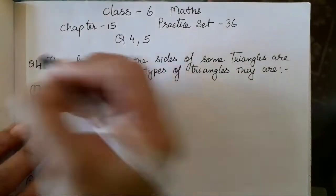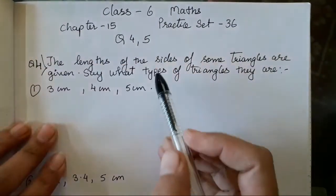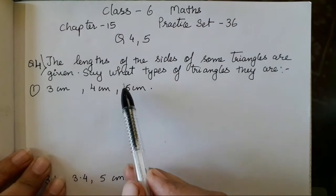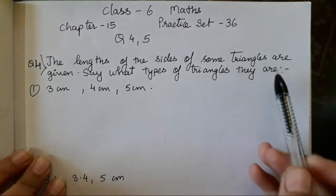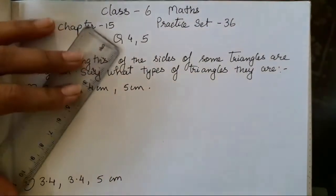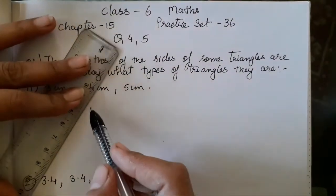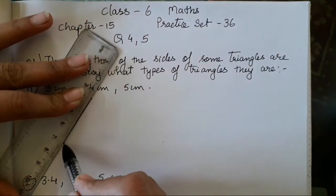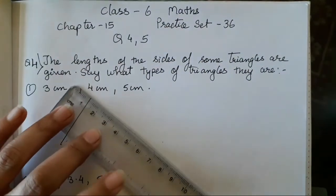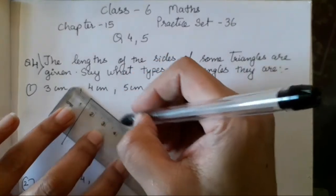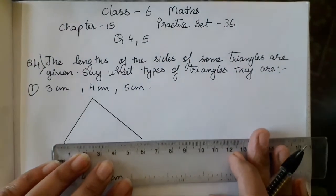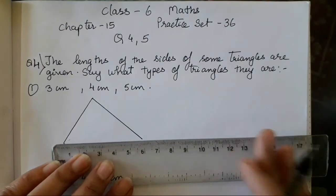So this is question number 4. The length of the sides of some triangles are given. We have to state what types of triangles they are. First, we will draw a rough figure in order to show the length and what type of triangle it is forming.